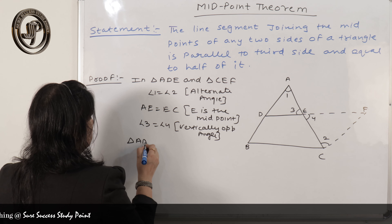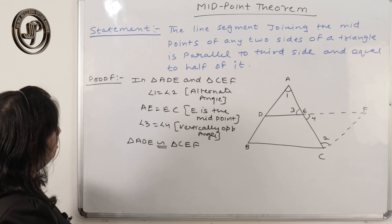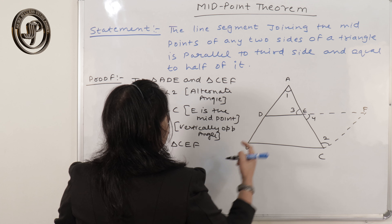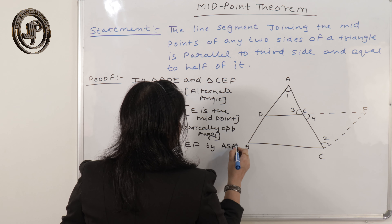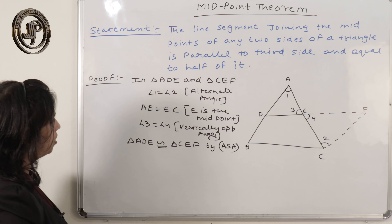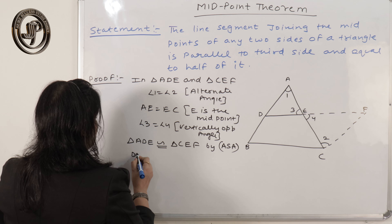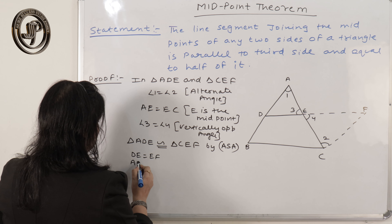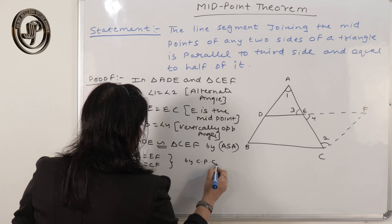Therefore, triangle ADE is congruent to triangle CEF by ASA (Angle-Side-Angle). Since the triangles are congruent, by CPCT: DE equals EF, and AD equals CF.